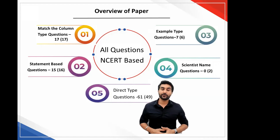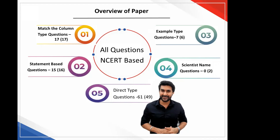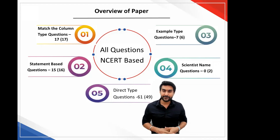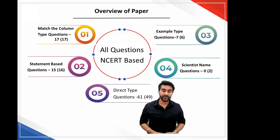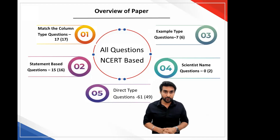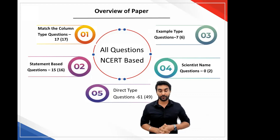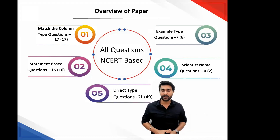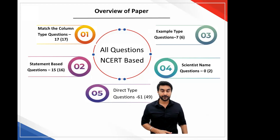So the distribution of questions has been more or less the same as last year, excepting that no scientist questions were asked and diagram-based questions were not asked — they weren't asked last year either. The largest chunk were the direct questions at 61, followed by match the column at 17, statement-based at 15, example-type at 7, and no researcher questions. Importantly, all these questions came from the NCERT — the entire paper, like 2020, was an NCERT-based paper.